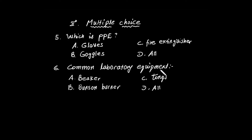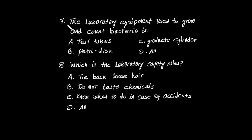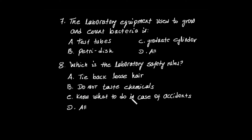Question number 6: Common laboratory equipment is A. Beaker. B. Bunsen burner. C. Tongs. Question number 7: The laboratory equipment used to grow and count bacteria — A. Test tubes. B. Petri dish. C. Graduated cylinder. Question number 8: Which is a laboratory safety rule? A. Tie back loose hair. B. Do not taste chemicals.